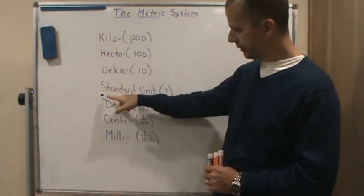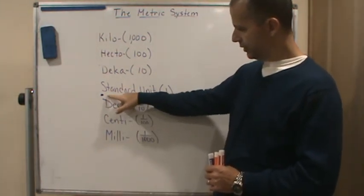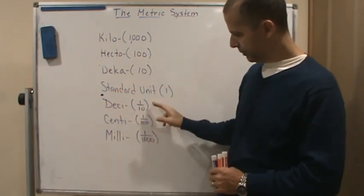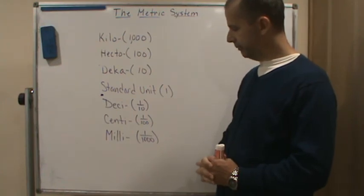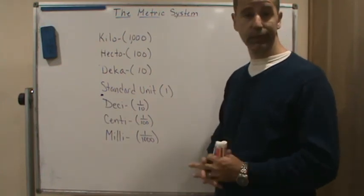So you can see the place values that these go in either direction. And so next we'll do some examples.